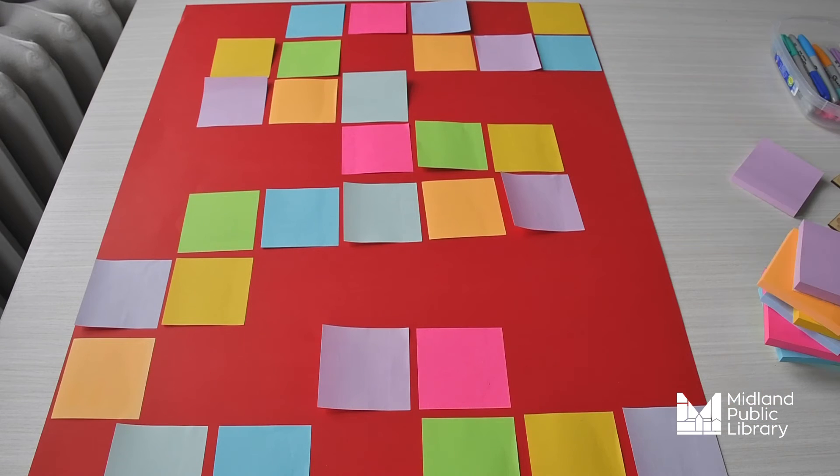Then think about different kinds of obstacles that you can put on various post-its throughout the game. For example, lose a turn. Roll again. Go back two spaces. Really, it's a matter of using your imagination. Let's see what you can come up with.